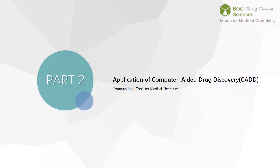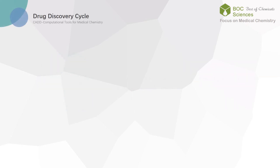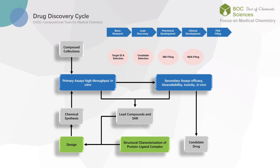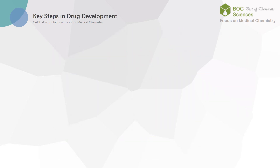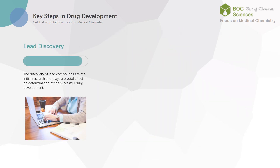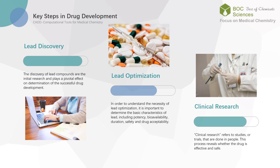Next, we will introduce the application of computer-aided drug design technology. The drug development process is divided into five main steps: basic research, lead compound discovery, preclinical research, clinical research, and FDA approval. In this process, the three key steps are lead discovery, optimization, and drug clinical research, in which lead discovery and optimization require computer assistance.